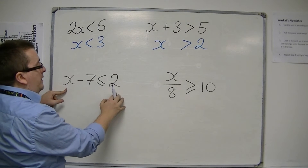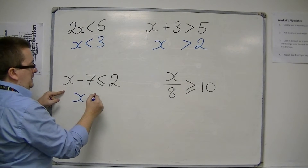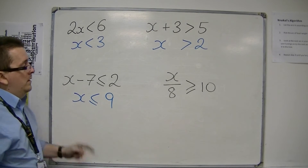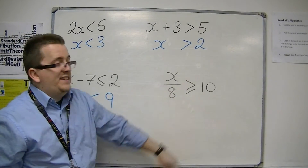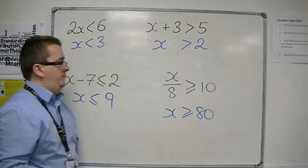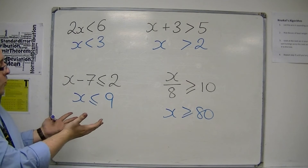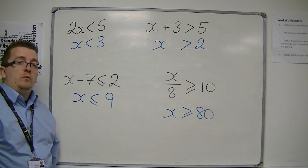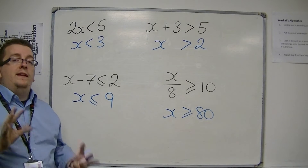x minus 7 is less than or equal to 2. Treating it like x minus 7 equals 2, I'd add 7 to both sides, so x is less than or equal to 9. And something divided by 8 is greater than or equal to 10 — well, that's 80, so x is greater than or equal to 80. All that has happened is the equal sign has been swapped with another symbol, but everything else I've been able to do before is perfectly valid and allowed.